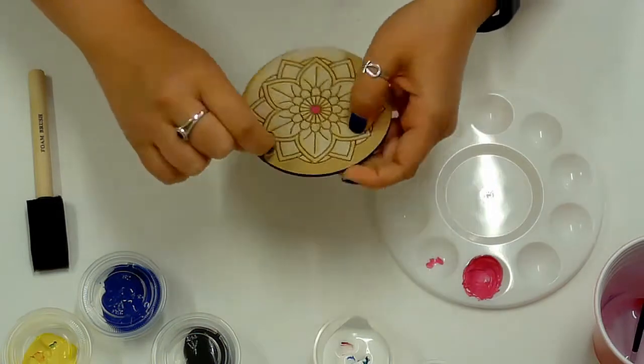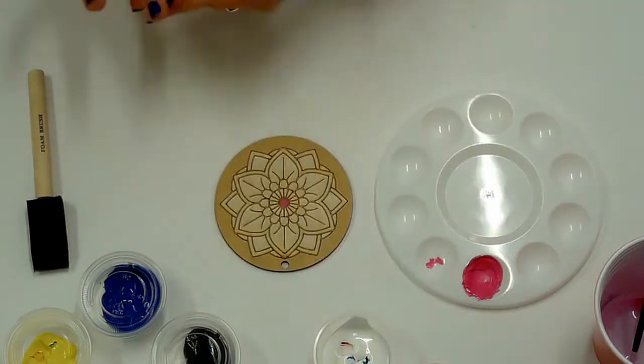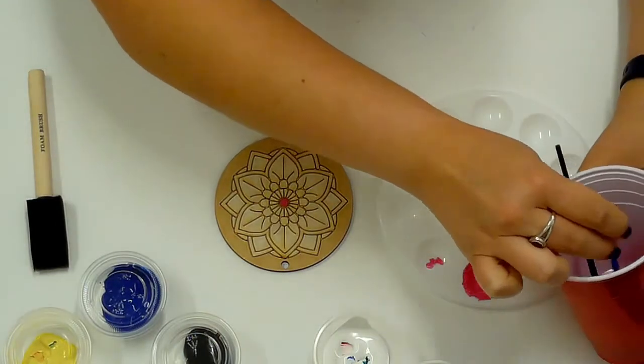While the center is drying, remove the masking tape from the outermost section and continue painting. Remember to apply multiple coats on every section.